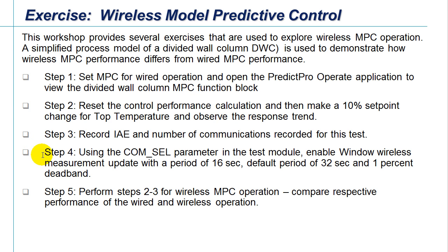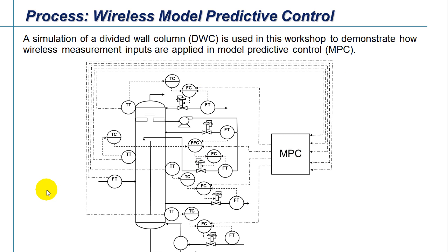We'll then enable wireless measurements on the column control, reset our performance calculation, and introduce again a change into the top temperature to compare performance using wireless versus wired.